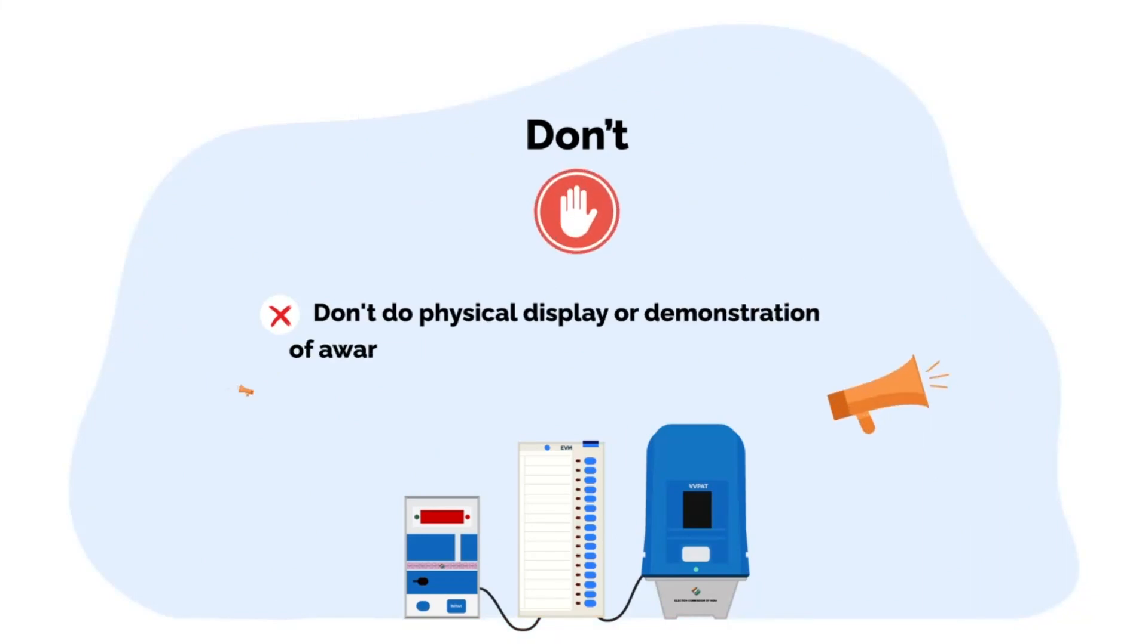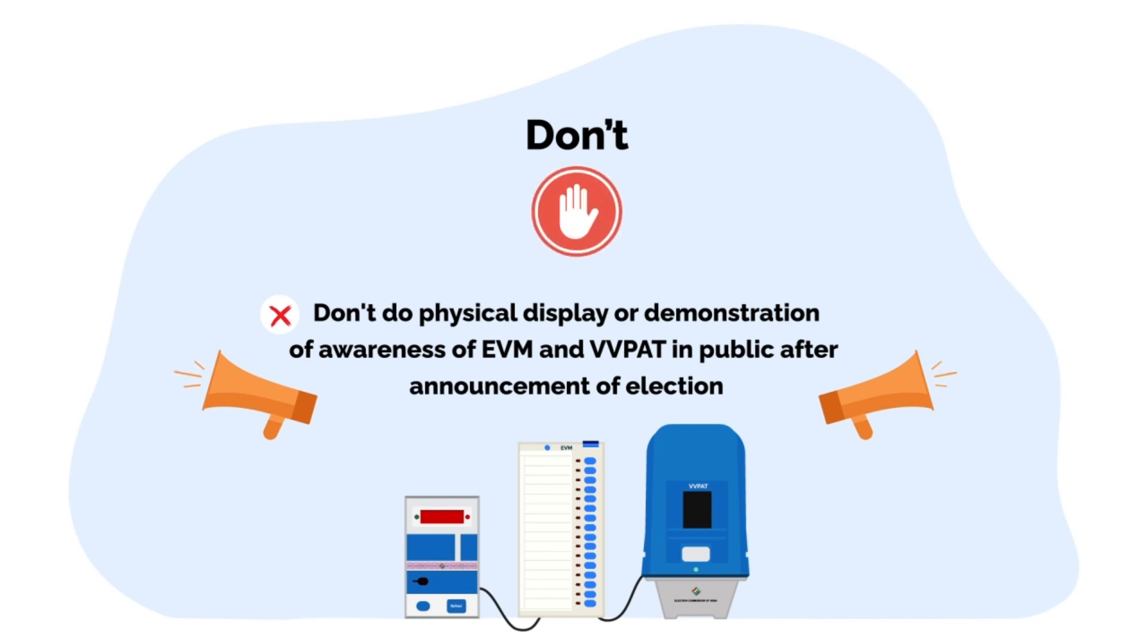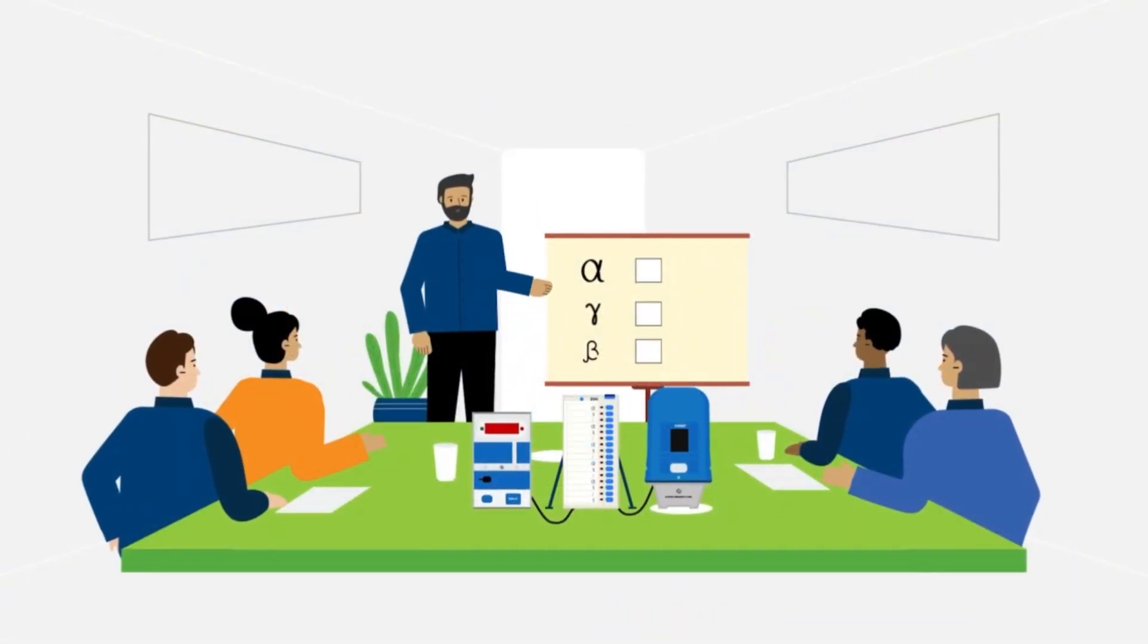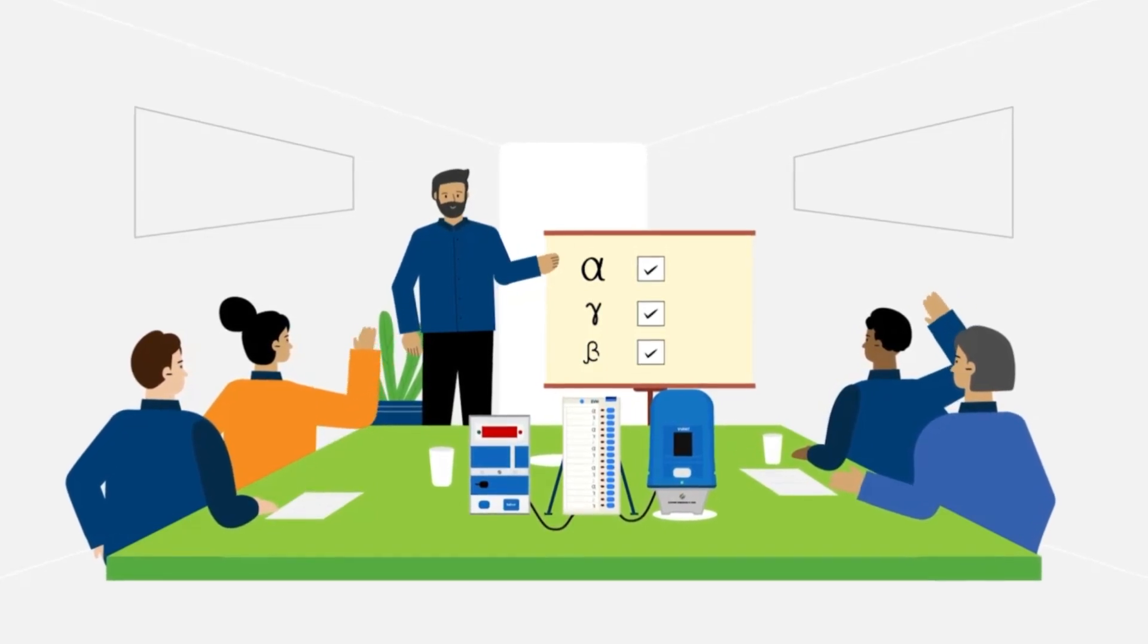Don't do physical display or demonstration of EVM and VVPAT in public after announcement of election. Don't forget to train in awareness EVM and VVPAT in poll day results after de novo FLC randomization commissioning.